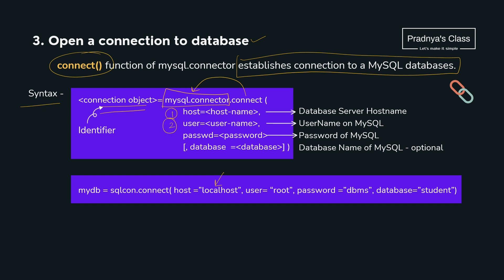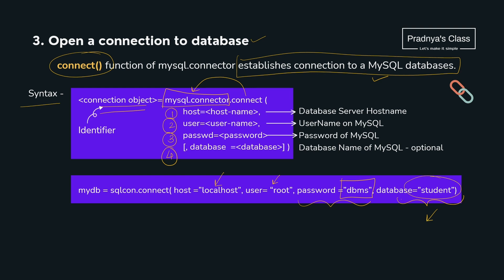The second parameter is user — for that we will write root. The third parameter is password — you will write here the password which you entered while installing MySQL software. The fourth parameter is database — here we provide the name of the database on which you need to work. If you are not working on a particular database, you can skip this parameter.